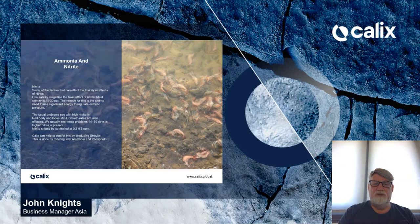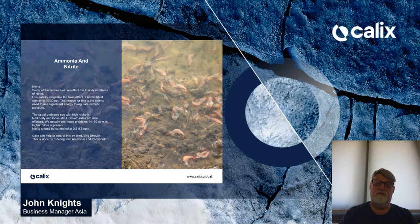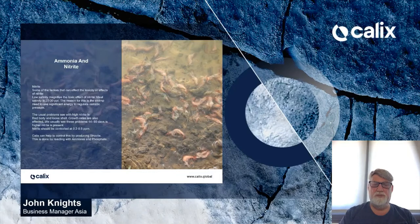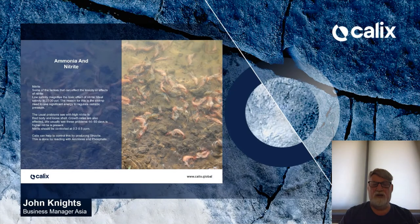The usual problems with elevated nitrite are red body and loose shell. Growth rates are also affected. We usually see these problems 44 to 60 days into the cycle. Nitrite should be controlled at 0.2 to 0.5 parts per million. Slow growth and uneven deaths will occur at higher nitrite levels.